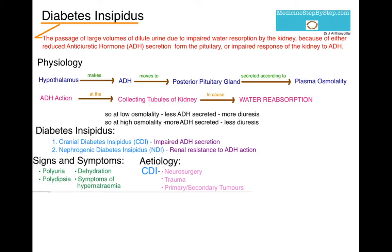In cranial diabetes insipidus, there is a problem with the hypothalamus. The causes include neurosurgery, trauma, tumours, infiltrative disease such as sarcoidosis, and it can be idiopathic.